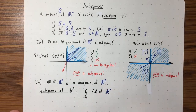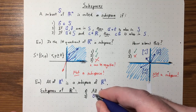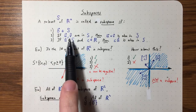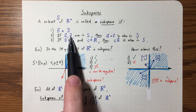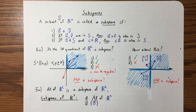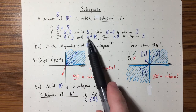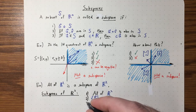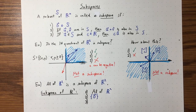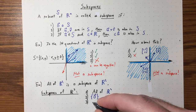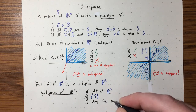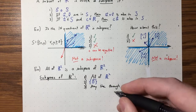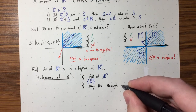There's another pretty boring subspace: just the set containing only the zero vector. Zero is in the set, the sum of zero plus zero is zero, and any scalar times zero is zero. So that's another subspace. And then any line through the origin is also a subspace — it has to go through the origin so that zero is in it.